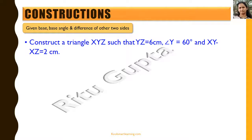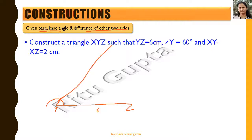Now we construct a triangle when the base, base angle, and difference of the other two sides are given. We are given YZ equal to 6 cm, so we take YZ as the base. At Y we construct a 60 degree angle. On this 60 degree line we cut point A such that AY equals 2 cm. We join A and Z.